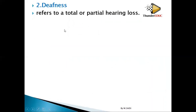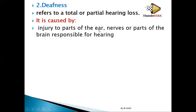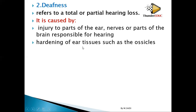Number two is deafness — it might be partial or total. Partial deafness means you have difficulties hearing; total deafness means you don't hear at all. It is caused by: number one, injury to part of the ear, nerve, or parts of the brain responsible for hearing, meaning the brain can't interpret what is being received. Number two, hardening of the ear tissue such as the ossicles — the ossicles cannot move and cannot change their position, so the vibration cannot be transmitted to the inner ear to be detected by the organ of Corti.